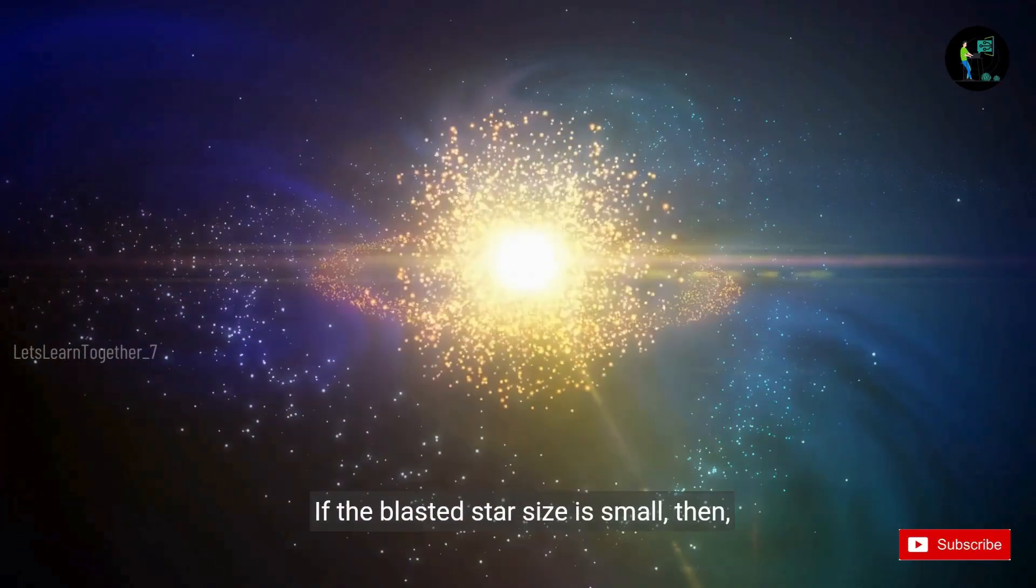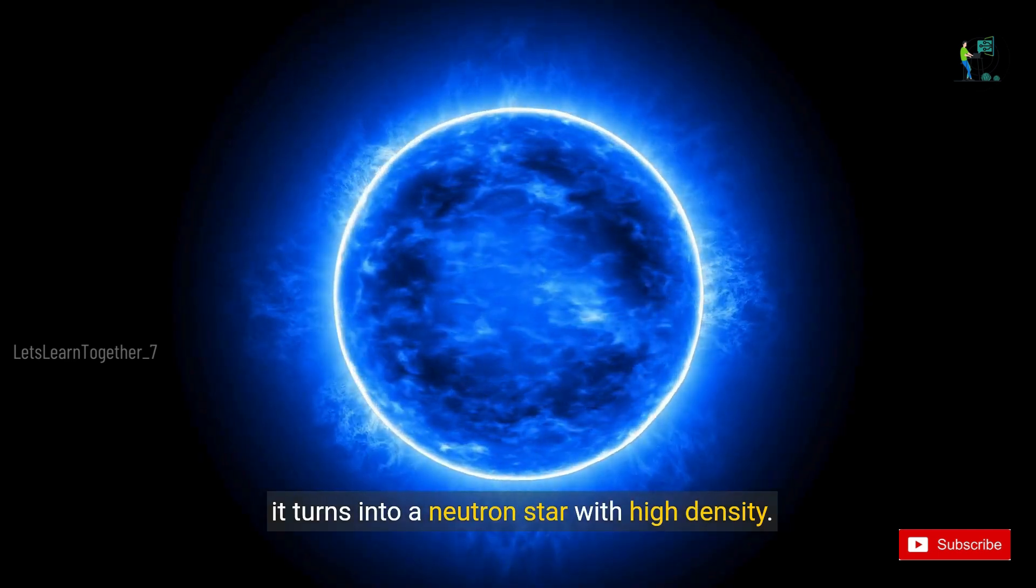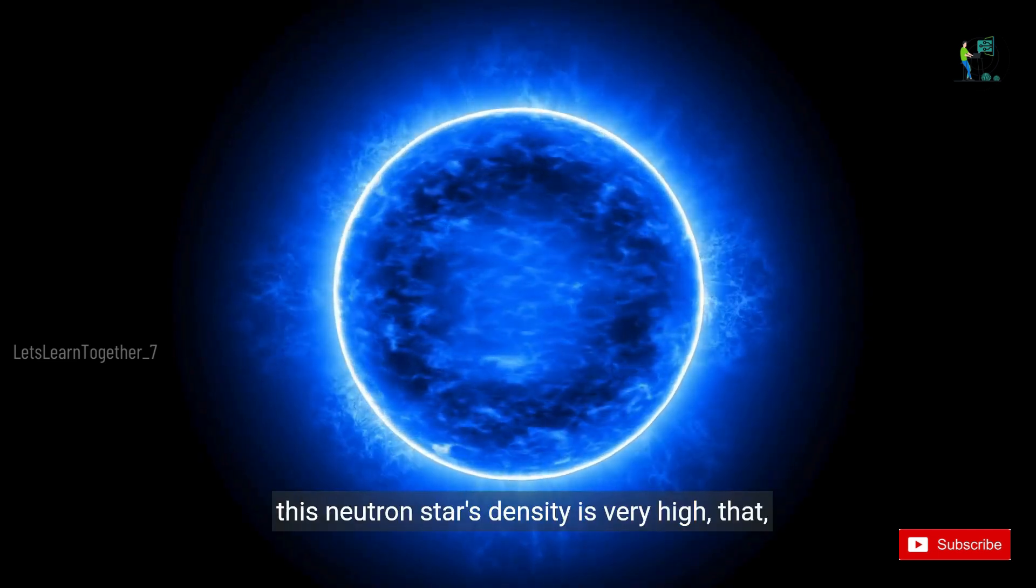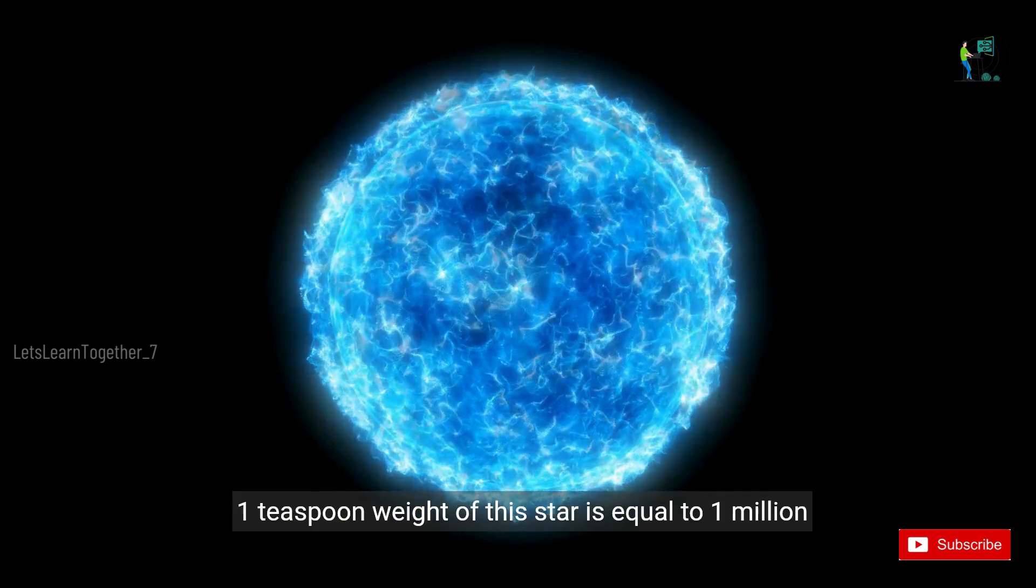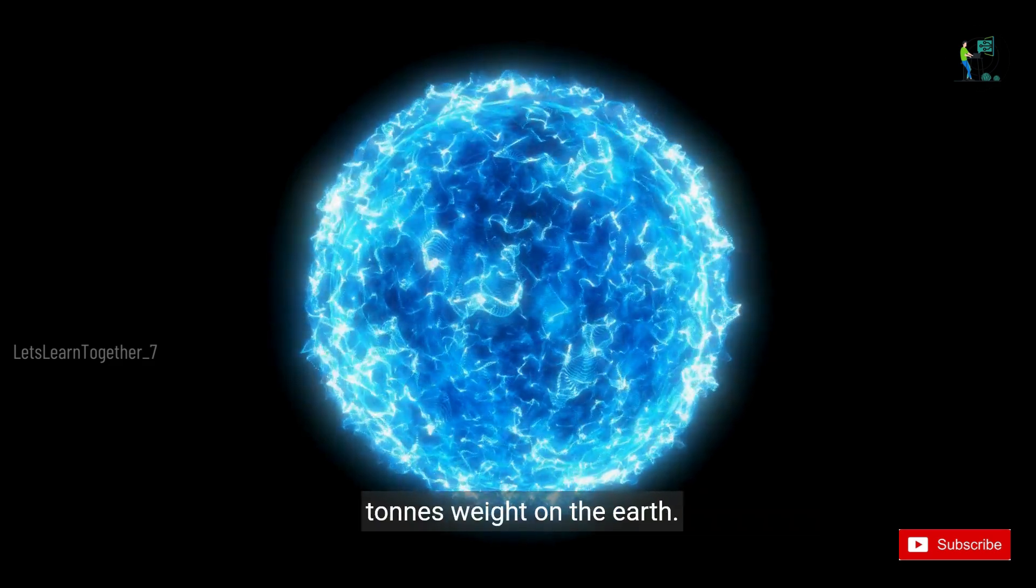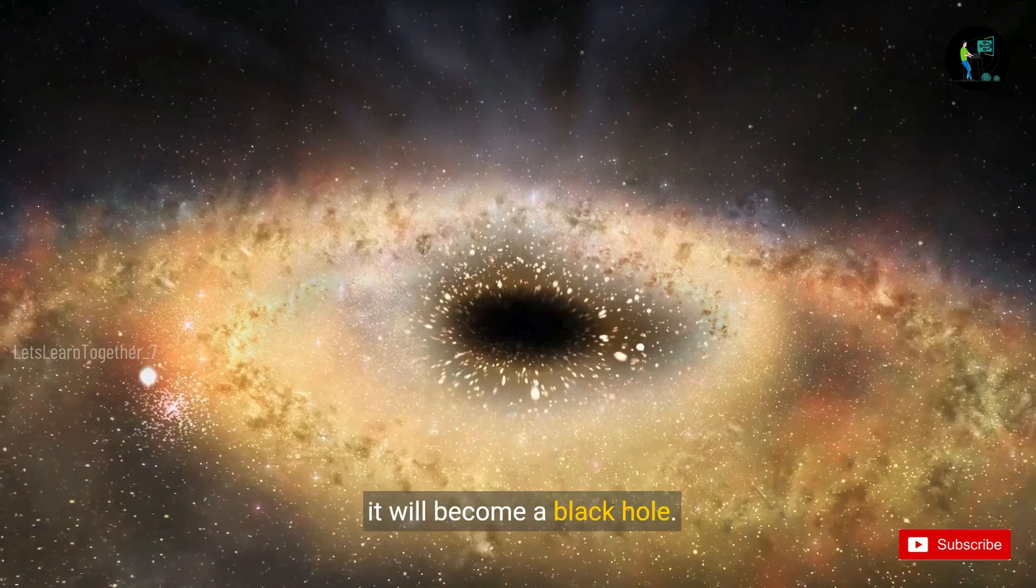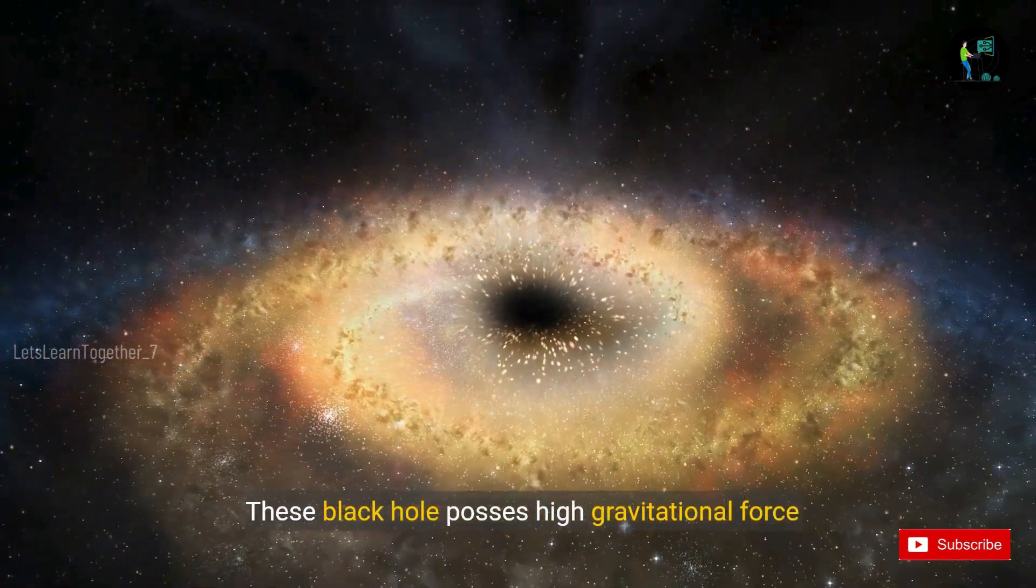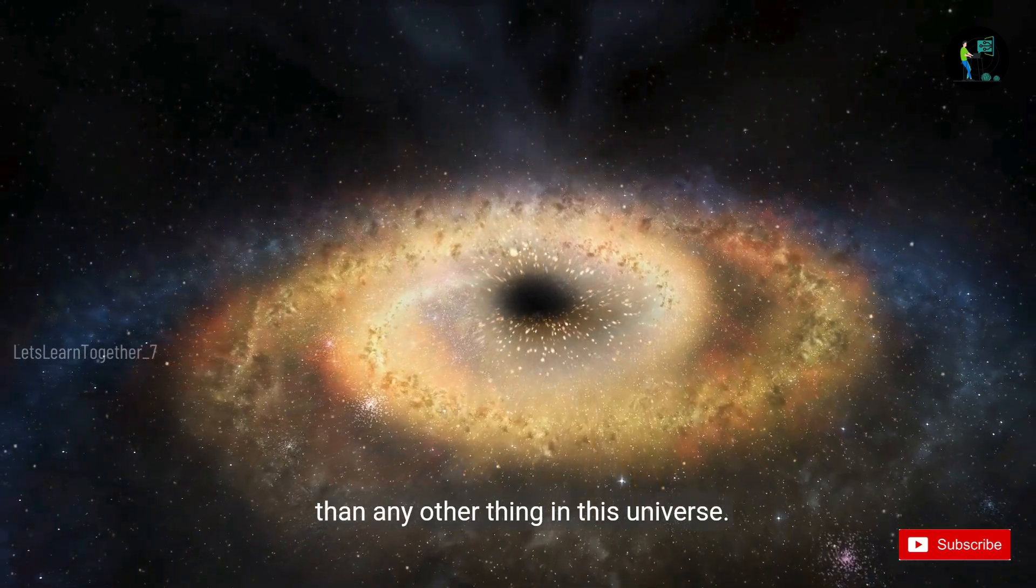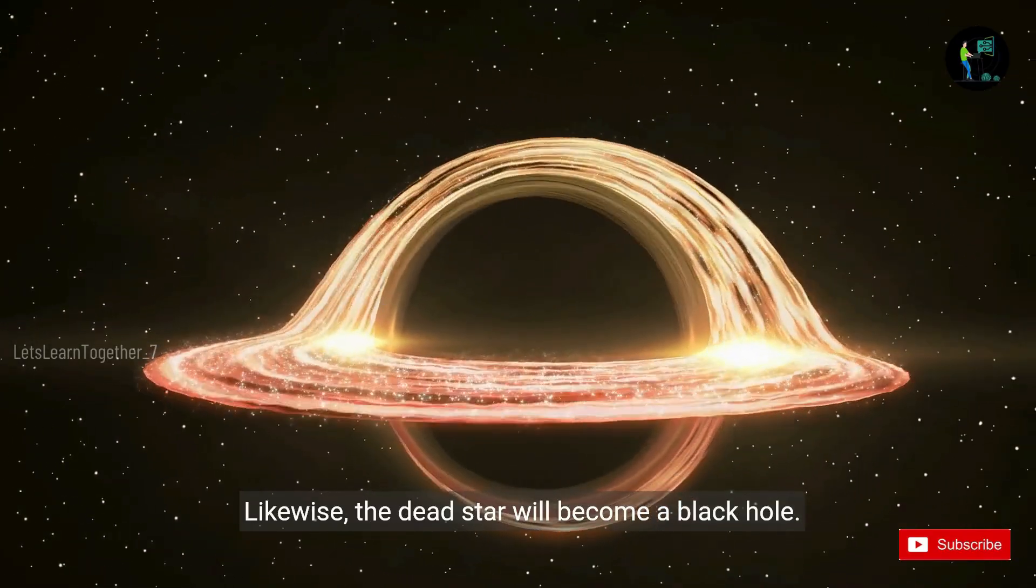If the blasted star size is small, then it turns into a neutron star with high density. This neutron star's density is very high. That one teaspoon weight of this star is equal to one million tons weight on the earth. And if the exploded star size is big, then after its explosion, it will become a black hole. These black holes possess high gravitational force than any other thing in this universe. Likewise, the dead star will become a black hole.